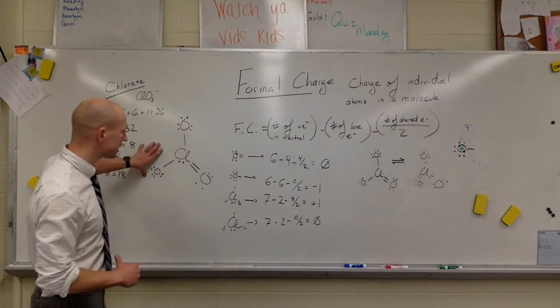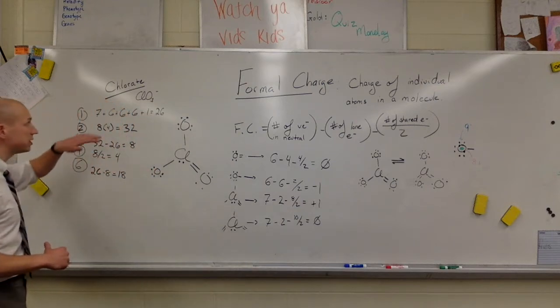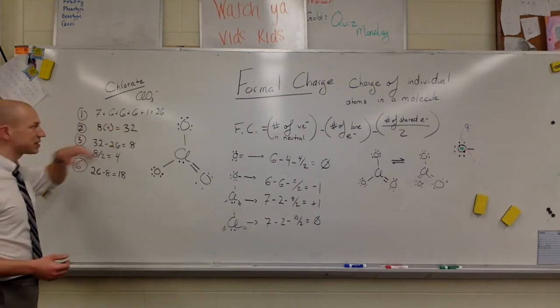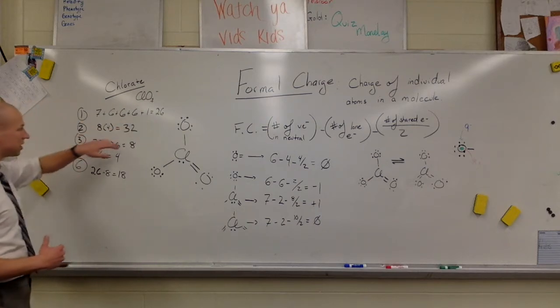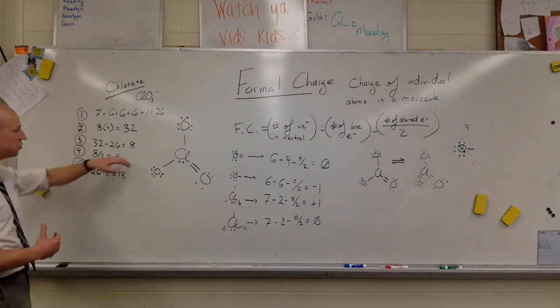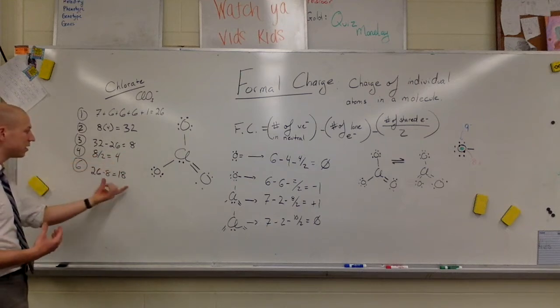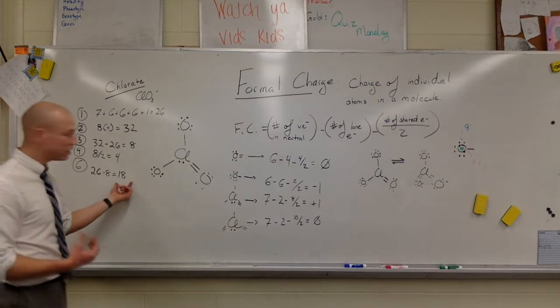So I made this Lewis-Dot structure for chlorate, ClO3-. I did the process. I got my 26 electrons. That's out of 32. That means that there are eight extra bonds that are needed. That's four bonds there with 18 valence electrons.